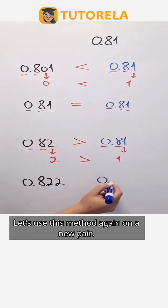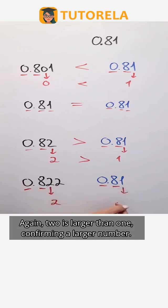Let's use this method again on a new pair. Again, 2 is larger than 1, confirming a larger number.